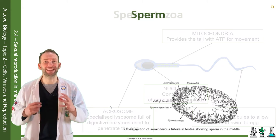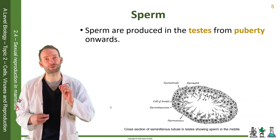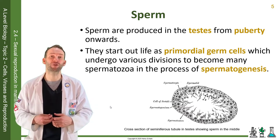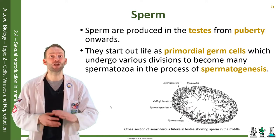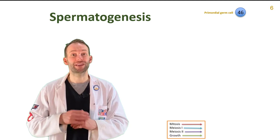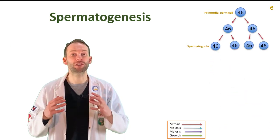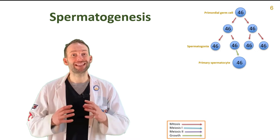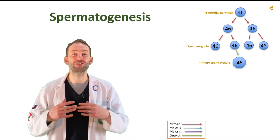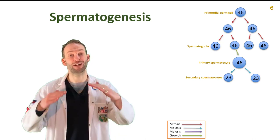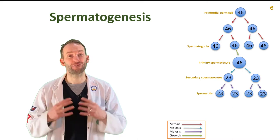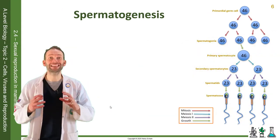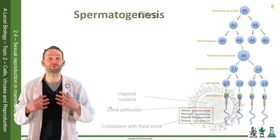Sperm are produced in the testes from puberty onwards. They start out life as a primordial germ cell, which undergoes various divisions to become many spermatozoa in the process of spermatogenesis. You start with a primordial germ cell that divides a few times first by mitosis to form spermatogonia. These grow bigger and are then called primary spermatocytes. These then undergo meiosis — the first division makes two secondary spermatocytes, which then divide again to make four spermatids. Finally, those spermatids differentiate, grow their tails, and become spermatozoa.